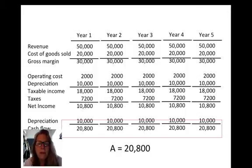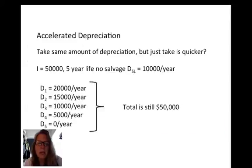But what if instead of spreading that $50,000 evenly, we accelerate it? That's known as accelerated depreciation. We're going to take the same $50,000 but front-load it: depreciation will be $20,000, $15,000, $10,000, $5,000, and $0.